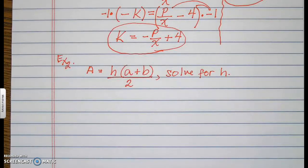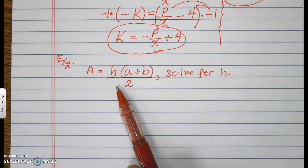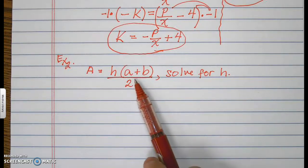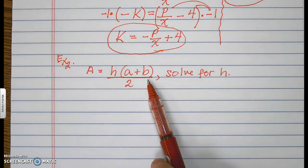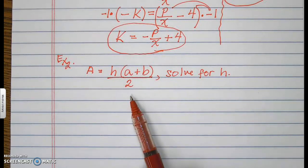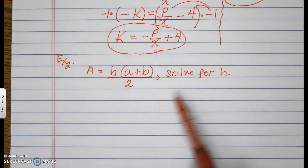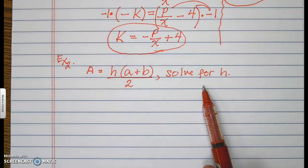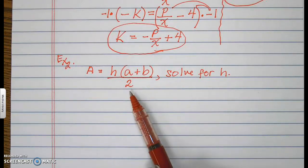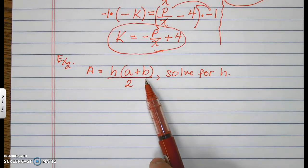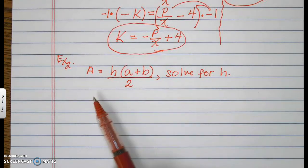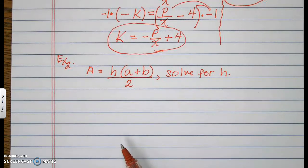Example number 2: A equals h times parentheses a plus b, close parentheses, all over 2. Solve for h. We need to remove the 2 at the bottom and the a plus b. The farthest from h is easiest to remove.